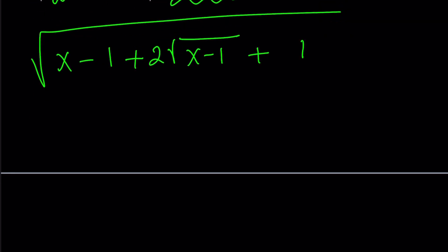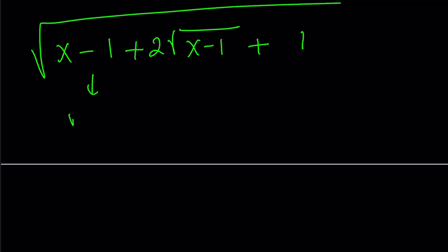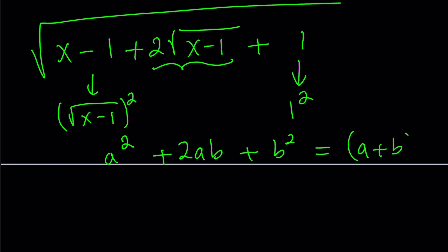Why? Because this is square root of x minus 1 squared, this is 1 squared, and this is 2ab. So I kind of got this pattern: a squared plus 2ab plus b squared. And as you know, this is a plus b quantity squared. Make sense?